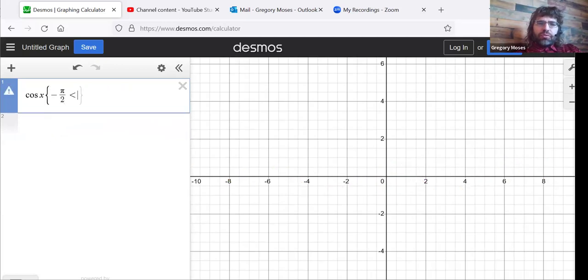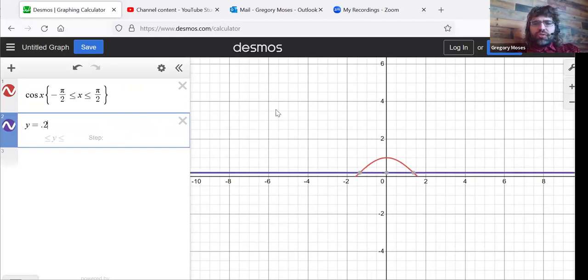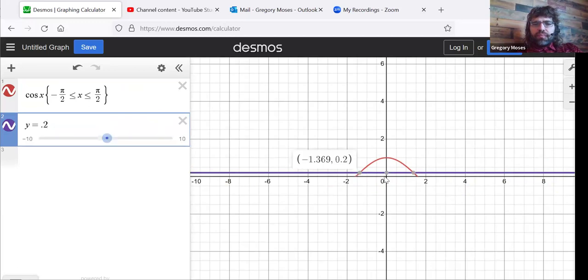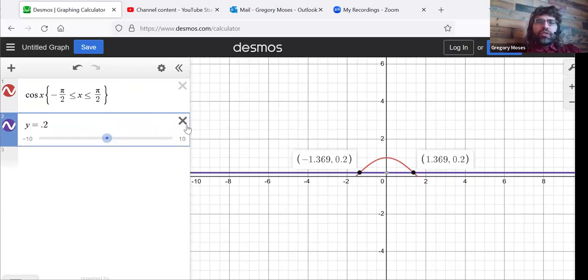So for the cosine, that restriction doesn't fix anything. It doesn't work. You see, this is still not one-to-one, according to the horizontal line test.